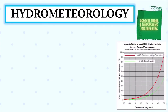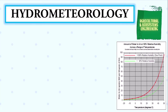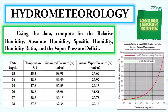Welcome to another tutorial video regarding hydrometeorology. This time I will show you how to measure humidity. Humidity can be expressed by, but not limited to, the following: relative humidity, absolute humidity, specific humidity, humidity ratio, and the vapor pressure deficit. We have different formulas to use for each of these.